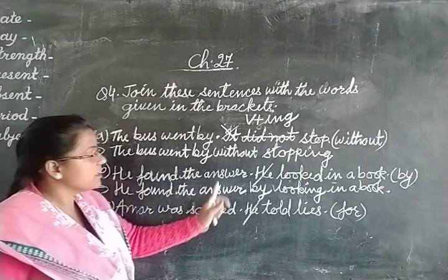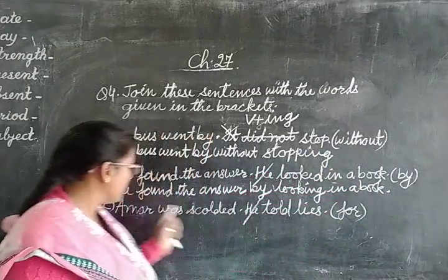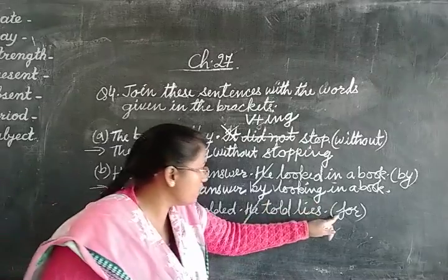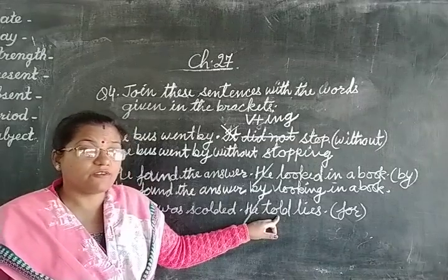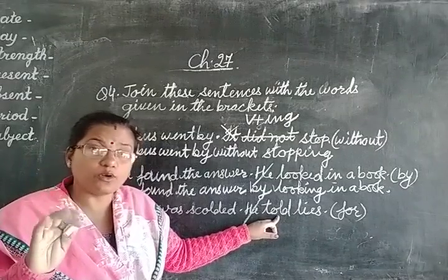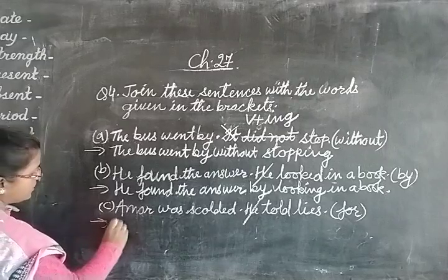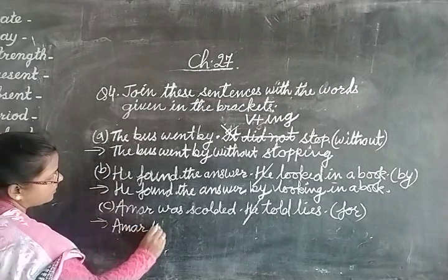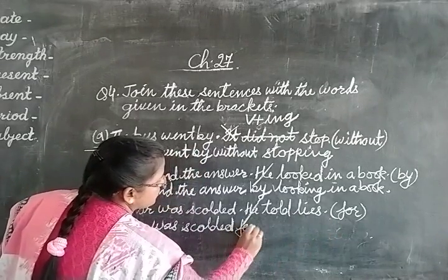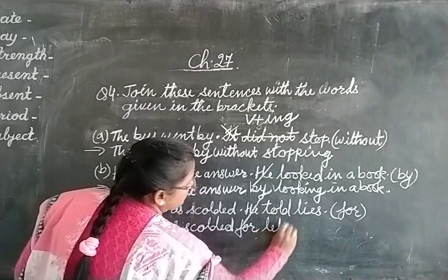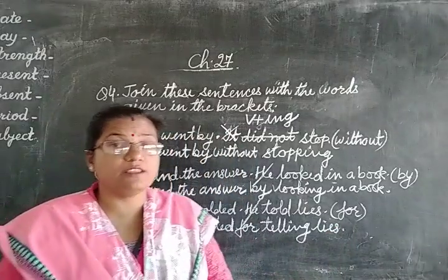Next question. Amar was called it. He told lies. And we have to use 'for.' Write: 'Amar was called it for.' We remove the pronoun 'he.' Now 'told' — which is the base verb? 'Tell.' Tell plus ing: 'telling.' So our answer will be: 'Amar was called it for telling lies.'